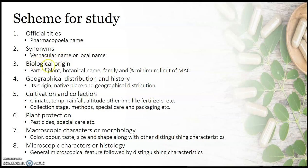The third one is biological origin. Biological origin is nothing but the definition of the crude drug. It includes the part of the plant which is used along with the botanical name and family. It also includes the minimum percent limit of the major active chemical constituents.